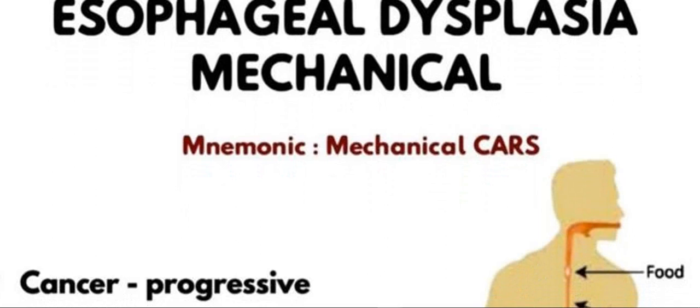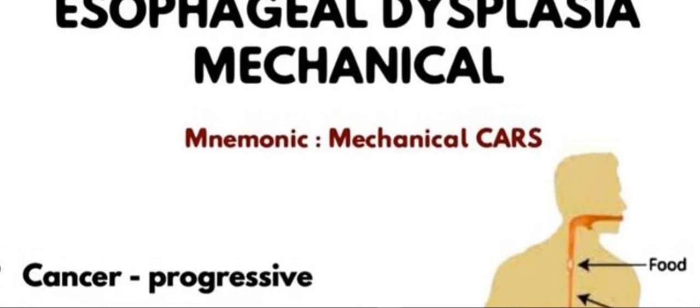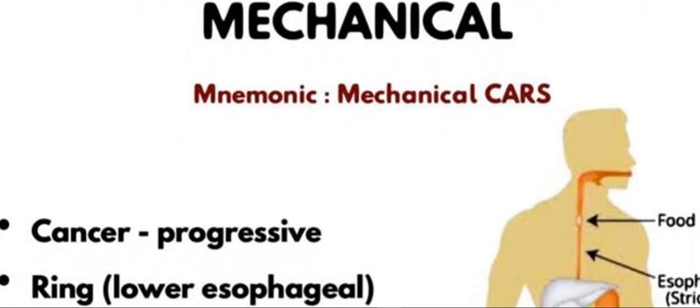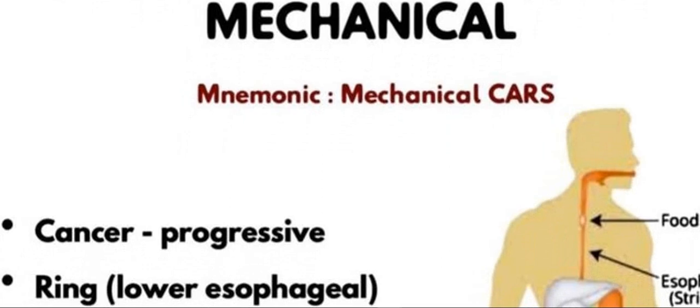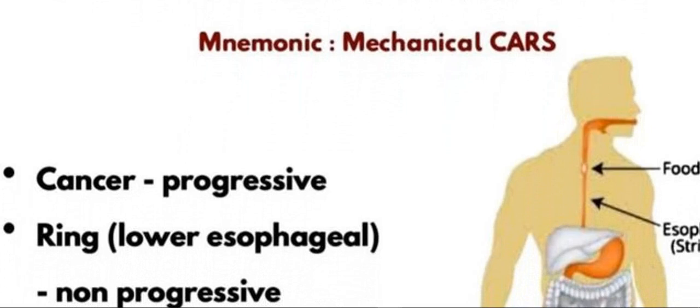CA is for cancers — if any cancer occurs in the esophagus, it can cause progressive dysphagia, making it a mechanical cause. The next letter is R, which stands for ring. If any ring formation occurs in the lower esophagus, this is non-progressive and is another cause of esophageal dysphagia.